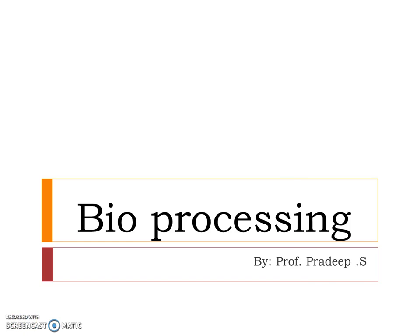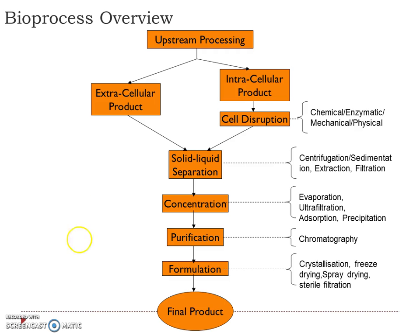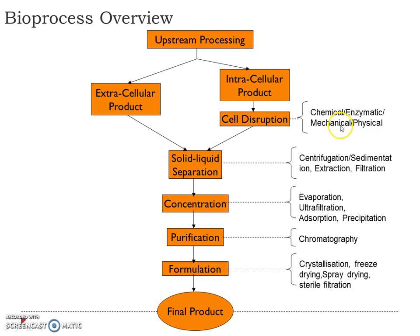Let us discuss about bioprocessing. In the last activity we did the fermentation process — the upstream processing where the product has been produced. The next step is the entire process called downstream processing. Here we have to separate out the product first. The product may be extracellular or intracellular. For intracellular products we have to break the cell and take out the product, using chemical disruption, enzymatic disruption, mechanical, or physical methods.